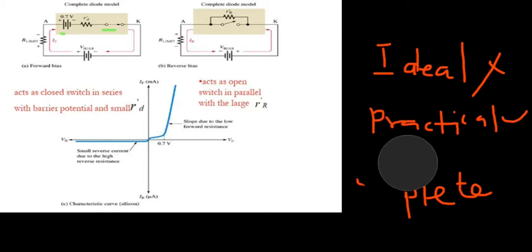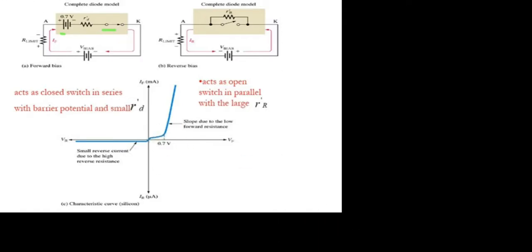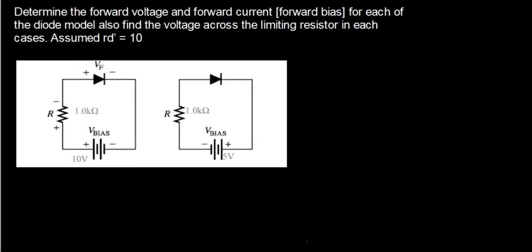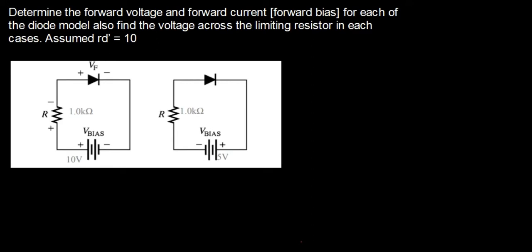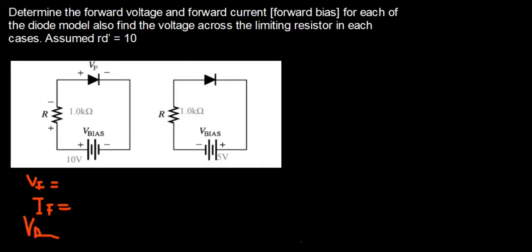With this knowledge, let's apply it and solve a question. The question asks us to determine the forward voltage (VF) and forward current (IF) for each of the diode models, and also find the voltage across the limiting resistor (VR) in each case. We will do this for the ideal diode, then the practical diode, and finally the complete diode.